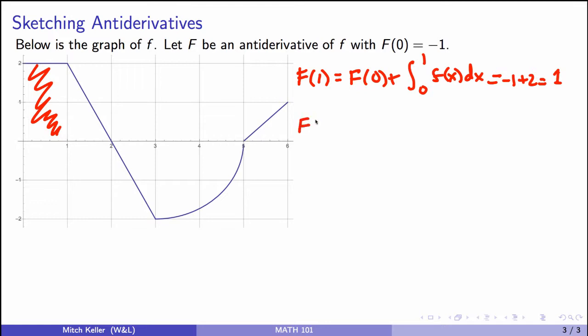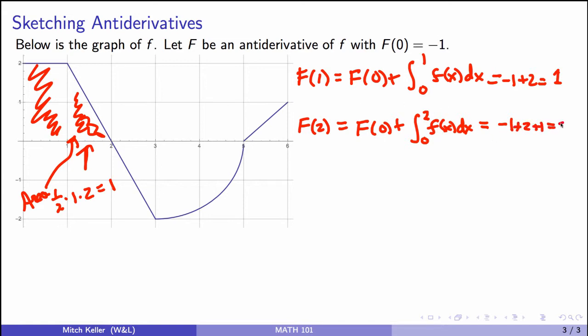Okay, let's go along to f of 2. That's going to be f of 0 plus the integral from 0 to 2 of f of x dx, which is, well, f of 0 is minus 1. And now we want the area I chained before plus this triangle. The area of that triangle is a half times the base is 1. And the height of the triangle is 2. So that area is 1. And so then we get the 2 that we had before from the rectangle plus 1. So this is 2.